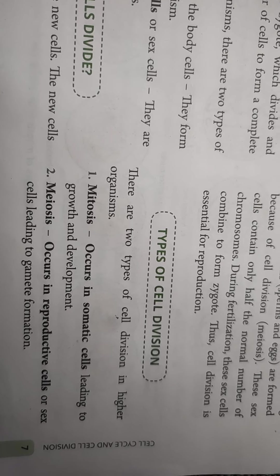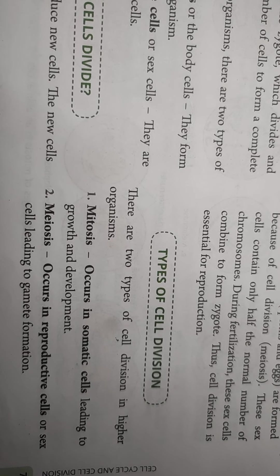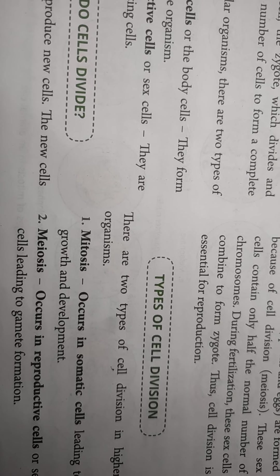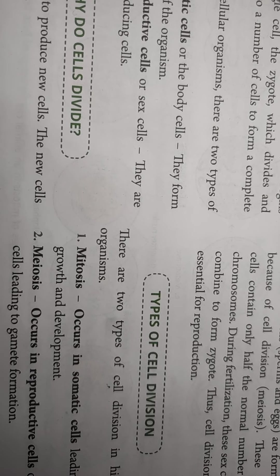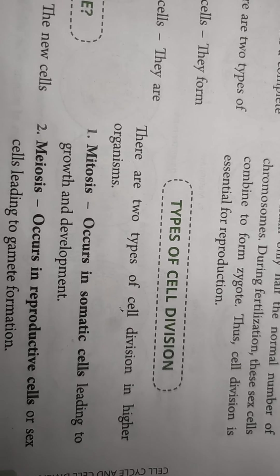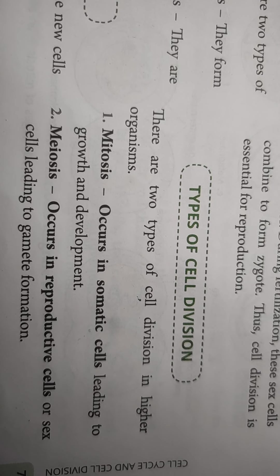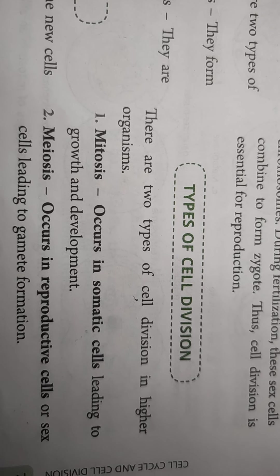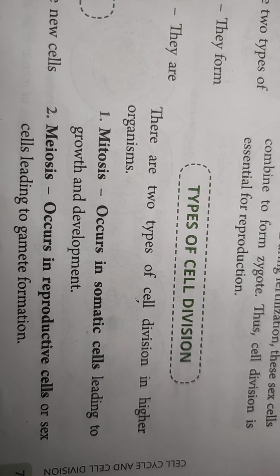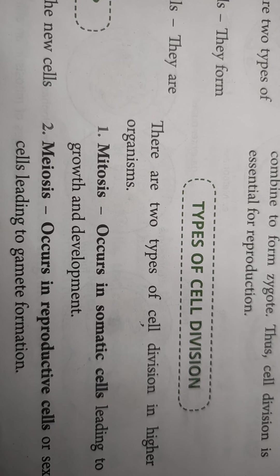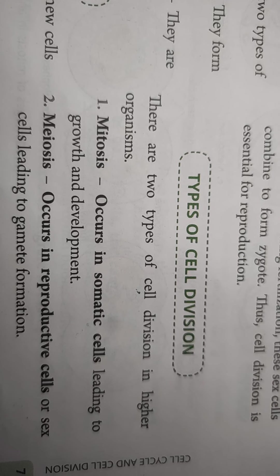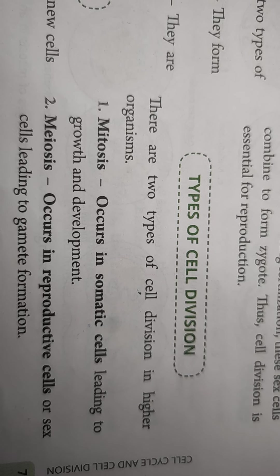Types of cell division: as already discussed, in multicellular organisms, different types of division occur in different body parts. There are two types of cell division — mitosis and meiosis. Mitosis occurs in somatic or body cells, leading to growth and development. Meiosis occurs in reproductive cells or sex cells, leading to gamete formation.